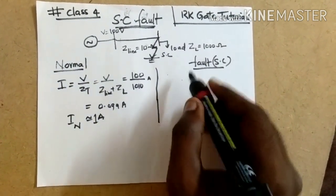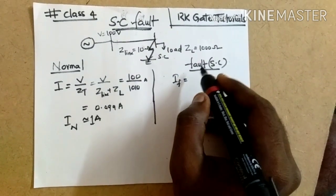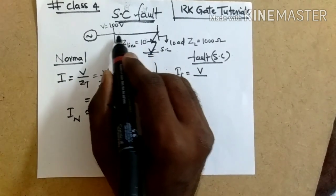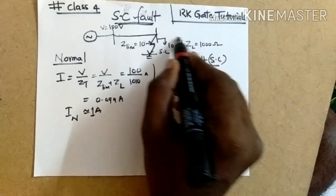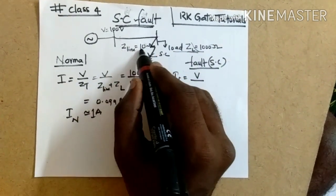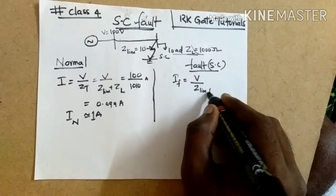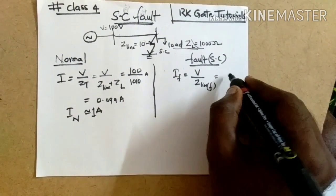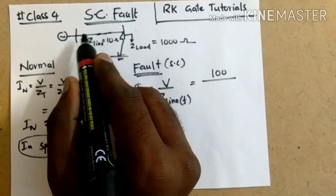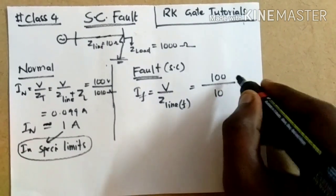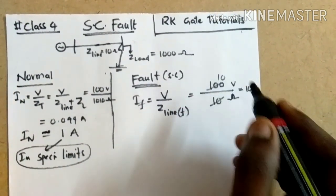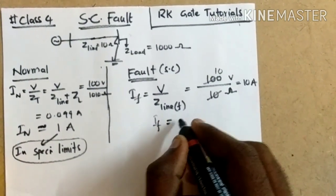Now let us go to the fault condition. The fault current I_F equals voltage divided by the fault impedance. When the fault takes place at this point, we cannot consider the load impedance because current is not going to the load. We only consider the line impedance as the fault impedance. So fault impedance equals Z_line equals 10 ohms. The fault current is 100 divided by 10, which equals 10 amps.